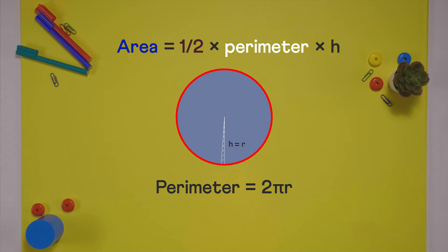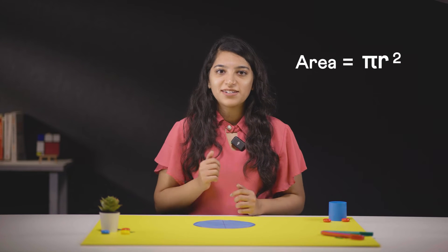So its area is half times perimeter times height, which is half times 2 pi r times r, which is pi r squared. And that's how we find the area of a circle.